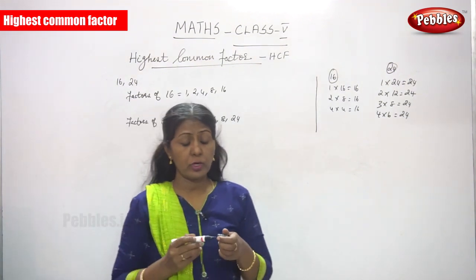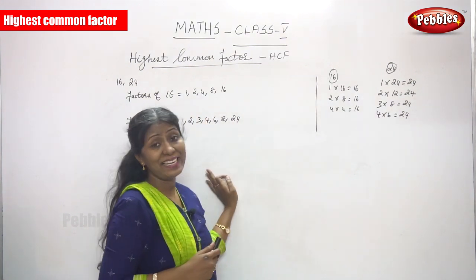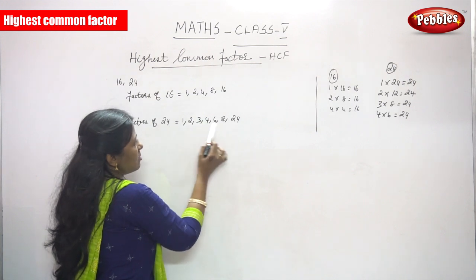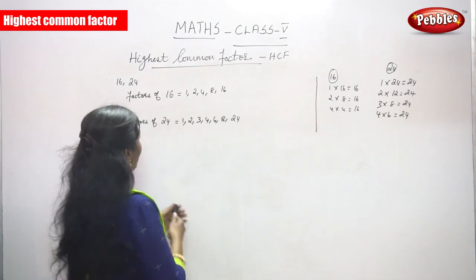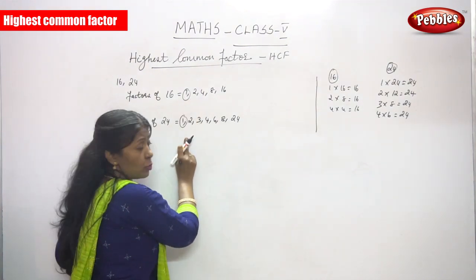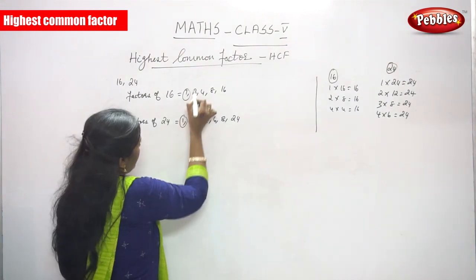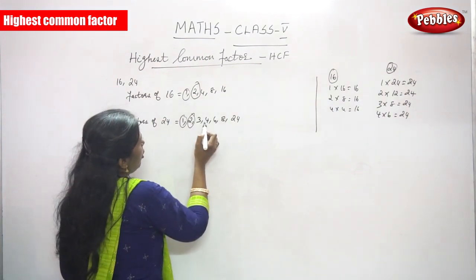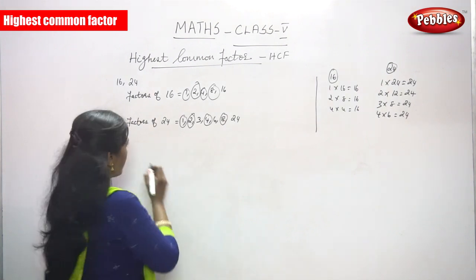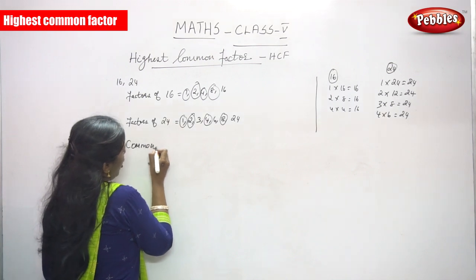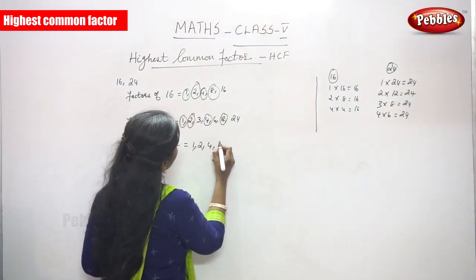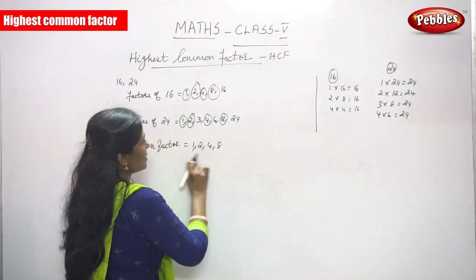Now find the common factors of 16 and 24. A common factor is a number that is present in the factors of both numbers. Looking at both lists: 1 is a factor of both, 2 is a factor of both, 4 is a factor of both, and 8 is a factor of both. So the common factors are 1, 2, 4, and 8.